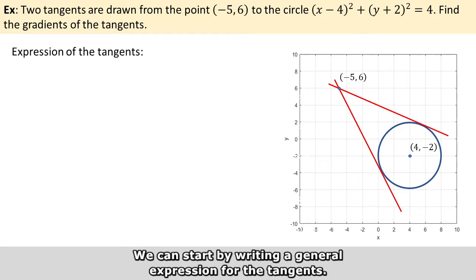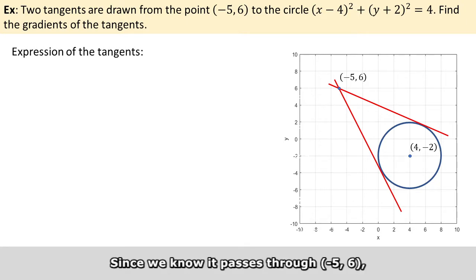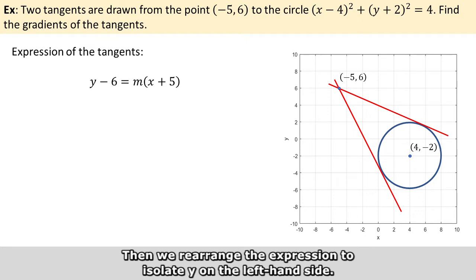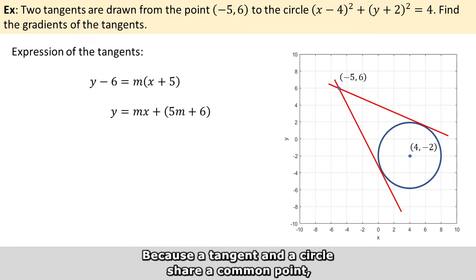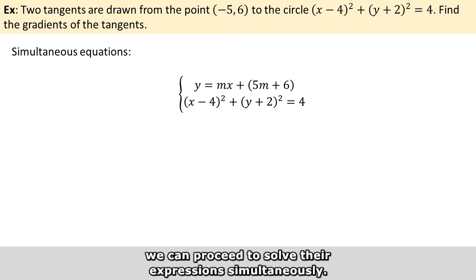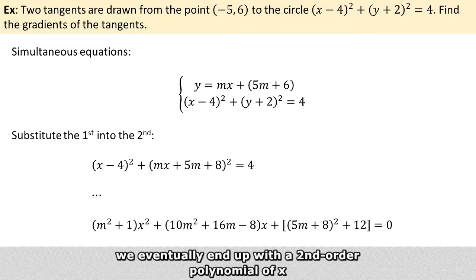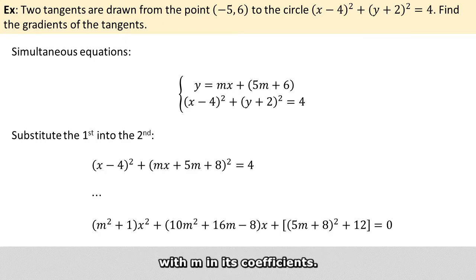We can start by writing a general expression for the tangents. Since we know it passes through the given point, we can put it in point-slope form, with m representing its gradient. Then we rearrange the expression to isolate y on the left-hand side. Because the tangent and the circle share a common point, we can proceed to solve their expressions simultaneously. Substitute the first equation into the second equation to get rid of y, and after some algebra, we eventually end up with a second-order polynomial of x, with m in its coefficients.